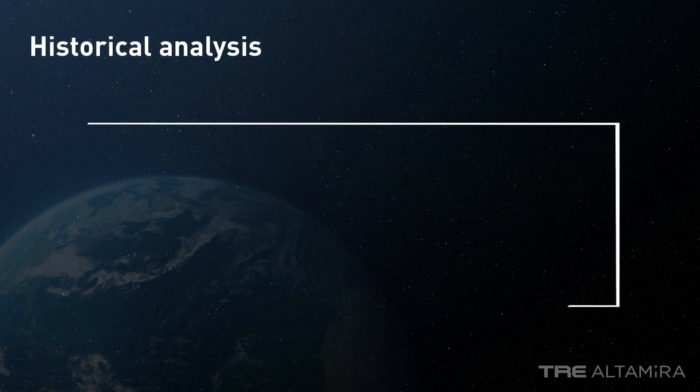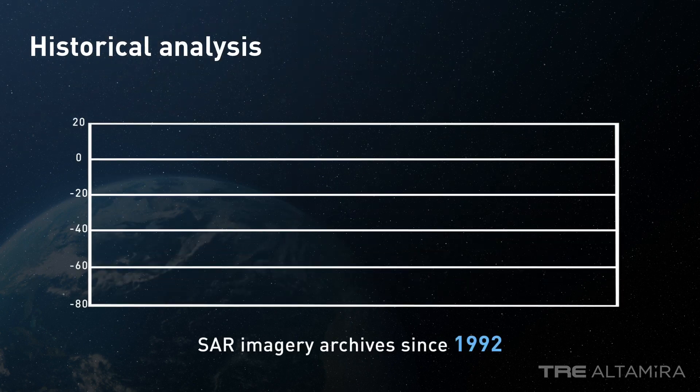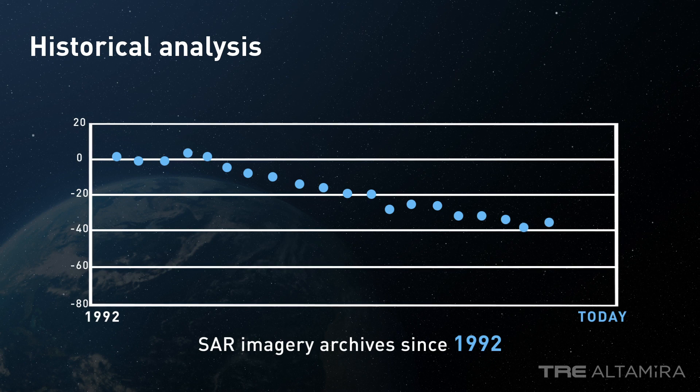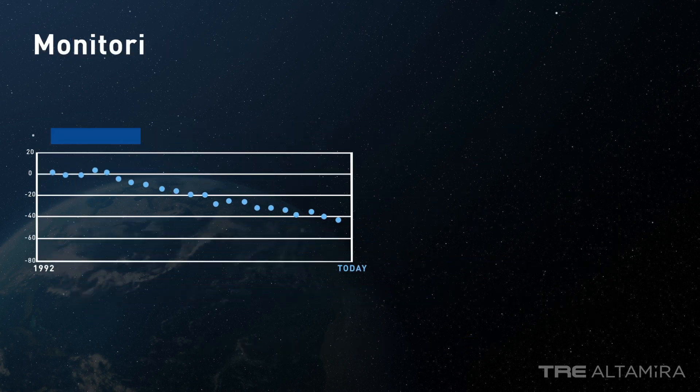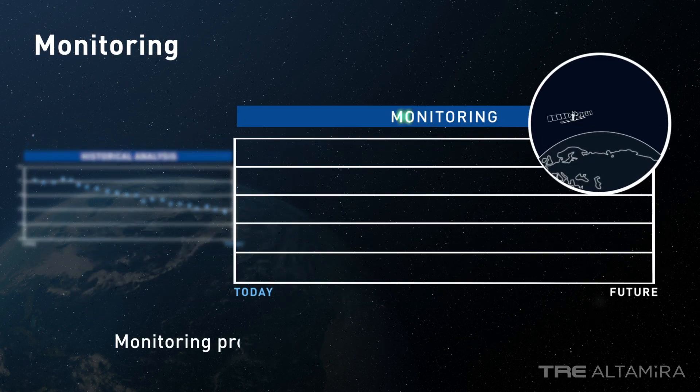Radar imagery archives date back to 1992 and can be used to look back in time and measure historical ground motion, a unique feature when compared with other geodetic techniques.